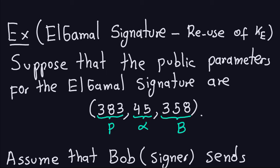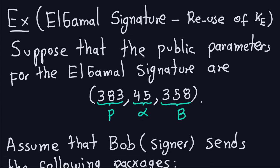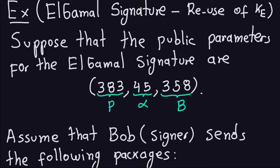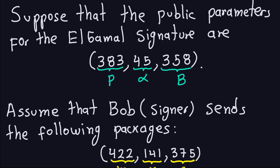So let's go ahead and go into the example. Suppose that the public parameters for the ElGamal signature are, as always, three numbers: the prime number, the generator, and the number B here, which is a modular exponentiation with the private key. Now because the numbers here are small, I can actually do a discrete log on this B here. But that's not necessary. It's not necessary to do a discrete log here to be able to find the private key. And that's the point of this example, that you don't need to do discrete logarithms.